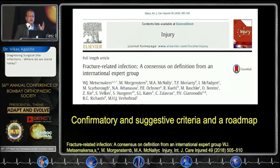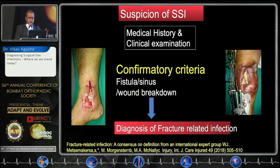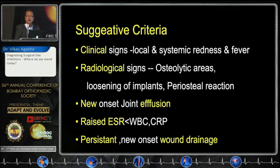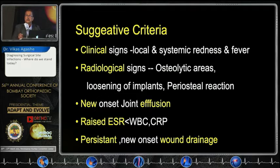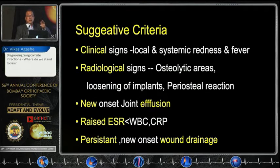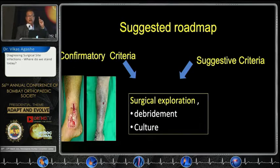A new definition was introduced around 2018, providing a roadmap. Certain findings — such as a sinus or wound breakdown — are clearly infection for anyone. The challenge arises when a patient presents with only pain, night pain, slight swelling, warmth, mildly elevated inflammatory markers, and persistent wound discharge. For these cases, the term 'suggestive criteria' was introduced: the wound is very likely infected given all these features. The key point was that whether criteria are confirmatory or merely suggestive, surgical exploration is necessary before you can definitively determine infection.